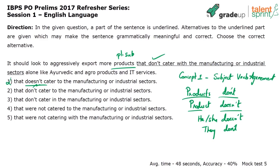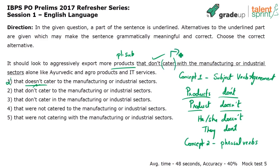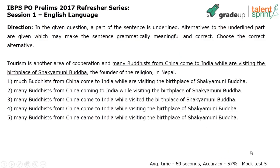It should look to aggressively export more. The second concept that we're going to look at to eliminate wrong answer options is collocations — or in this context, associated words that go together, which is phrasal verbs. What are phrasal verbs? Verb plus preposition. The verb is 'cater.' We're saying cater plus preposition. What is the preposition that will go with cater? That's your second concept.